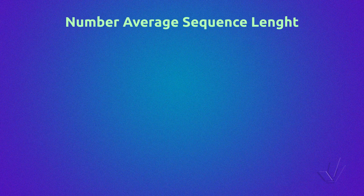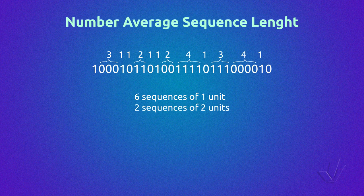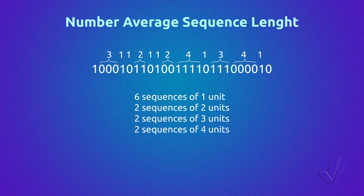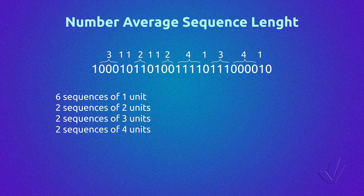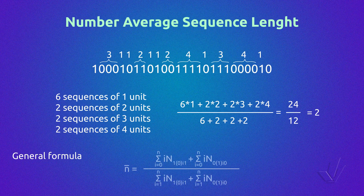More information about the number average sequence length: if we have two monomers 0 and 1, in this example we have six sequences of one unit, two sequences of two units, two sequences of three units, and two sequences of four units. The number average sequence length is given by the product of the number of sequences of each type by the number of units divided by the sum of the number of sequences, as shown in those equations.